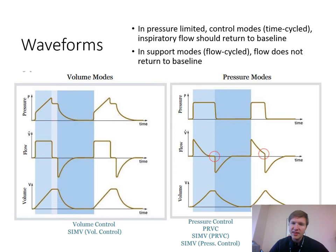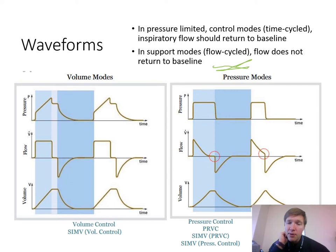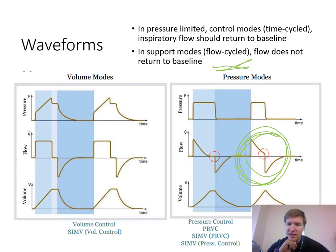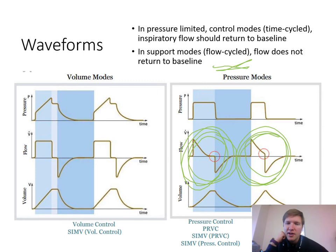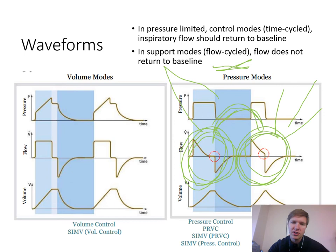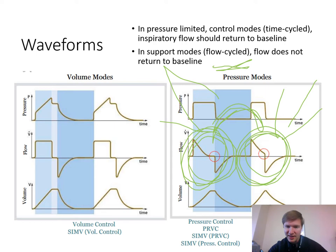In pressure-limited controlled modes, the inspiratory flow should always return back to baseline. When switching to pressure support modes — which are flow-cycled — flow does not return back to baseline, and that's perfectly normal. In a pressure support mode, you see the flow not returning to baseline before the breath is exhaled. Comparing pressure support to regular pressure control: if inspiratory flow doesn't return to baseline, it's a sign it was a spontaneous breath — they could be in spontaneous mode, SIMV, or IMV.